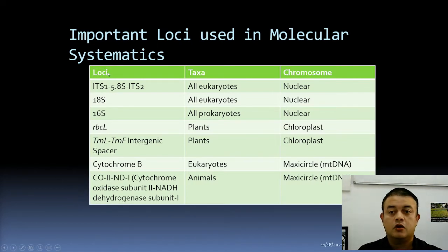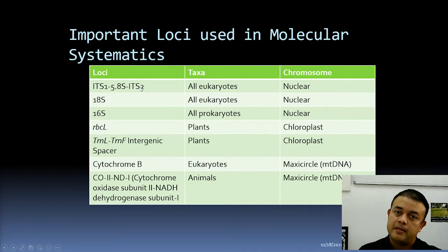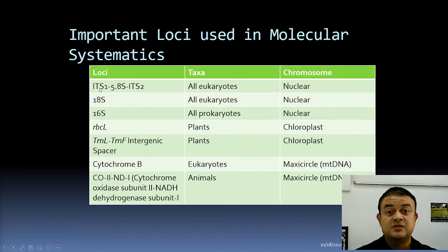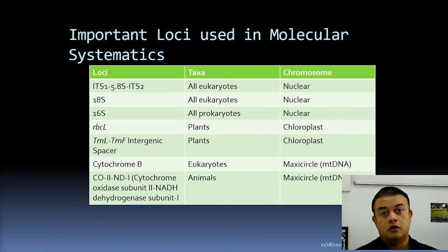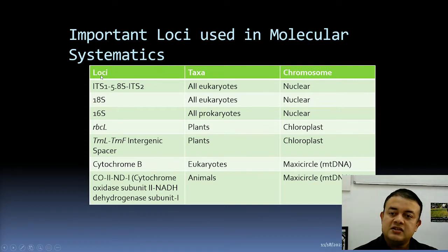Looking at the table with columns for loci, taxa, and chromosome: one of the most commonly used loci is ITS1–5.8S–ITS2. The 5.8S is a ribosomal structural gene coding for the small subunit in eukaryotes. ITS1 and ITS2 are internal transcribed spacers — they are introns, not coding sequences. The 5.8S is a gene coding for a ribosomal structural element, though it encodes an RNA, not a protein.